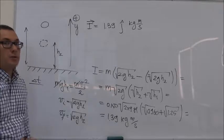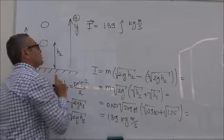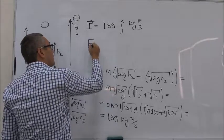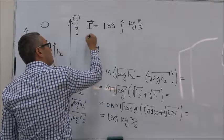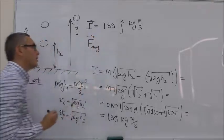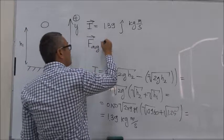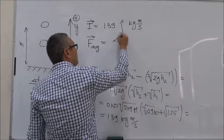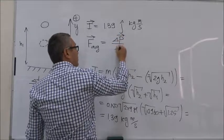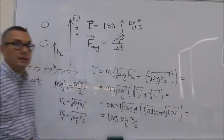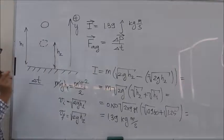Now, how do we calculate the average force? The average force that the floor exerts on the ball during this collision. The average force is equal to the change in momentum over the time interval during which we have that collision.